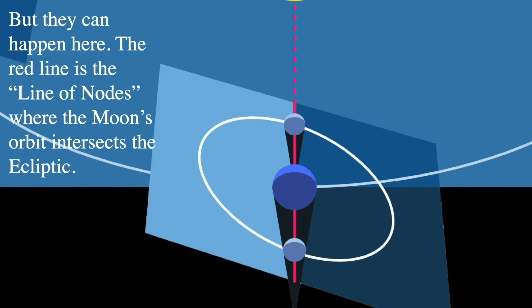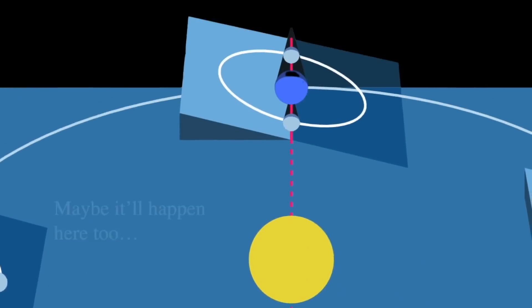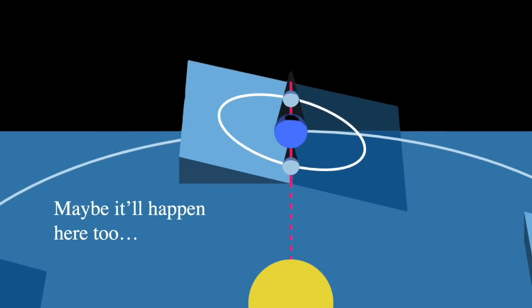However, it might not happen if the Moon is not at the line of nodes for, say, a new Moon. So if it's not in new Moon phase, then you won't get a total solar eclipse. And if it's not at full Moon, you won't get a total or even partial or even penumbral lunar eclipse. So the Moon has to be at the line of nodes on that day. And likewise, six months later, it certainly might happen there too.